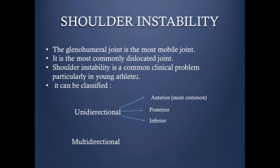Shoulder instability is a common clinical problem, particularly in young athletes, and can be classified as unidirectional — which is much more common, with anterior instability being the most common — or posterior and inferior, which are least common. Multidirectional instability can happen, particularly in certain sports, but it is less common.